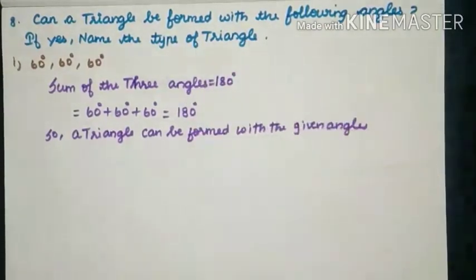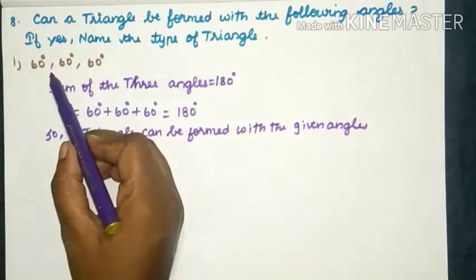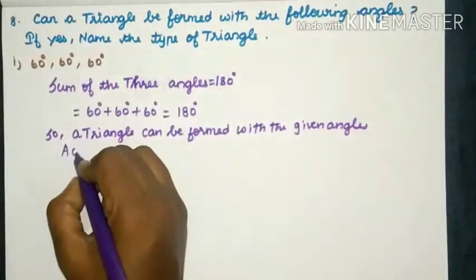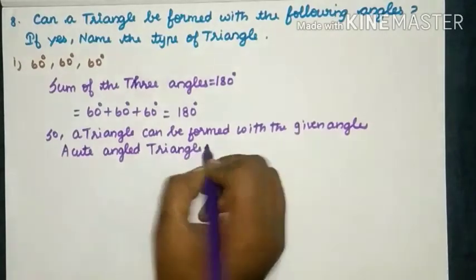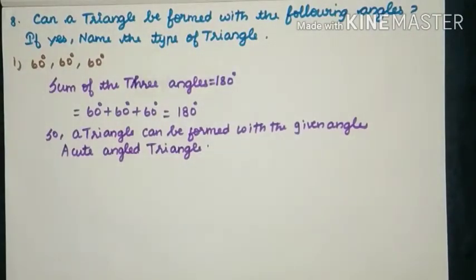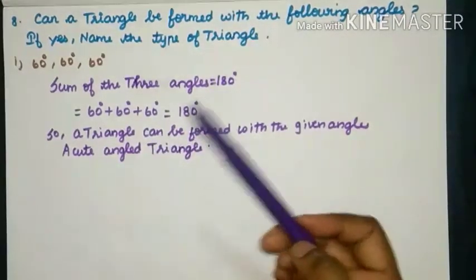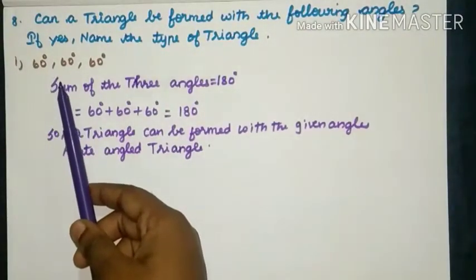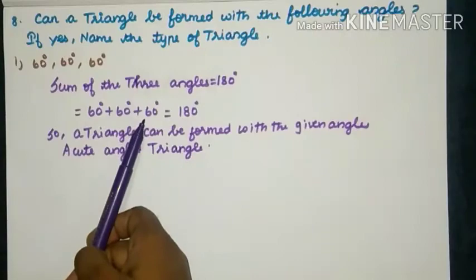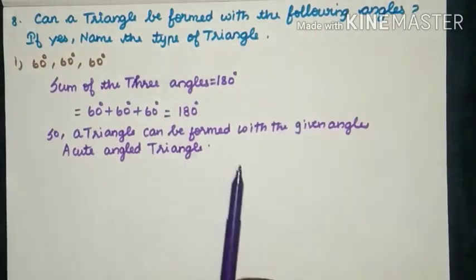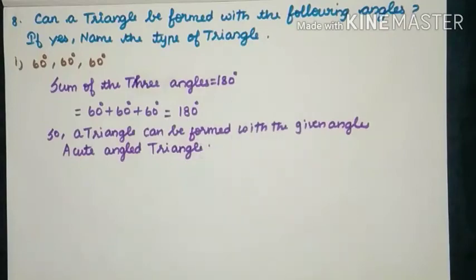The type: all angles lie between 0° and 90°, so it is an Acute Angled Triangle. Remember: if the given question is about the sides of a triangle, use the triangle inequality property. If the given question is about angles, use the rule that the sum of three angles equals 180°. If the sum equals 180°, a triangle can be formed; if not, it cannot.